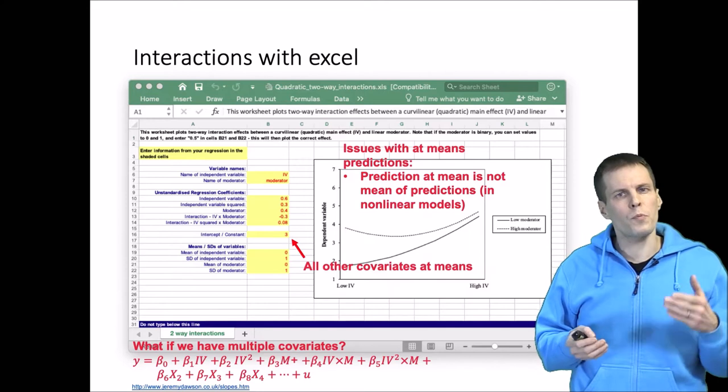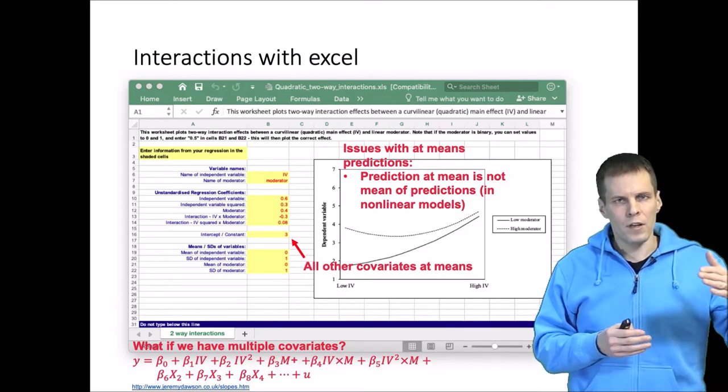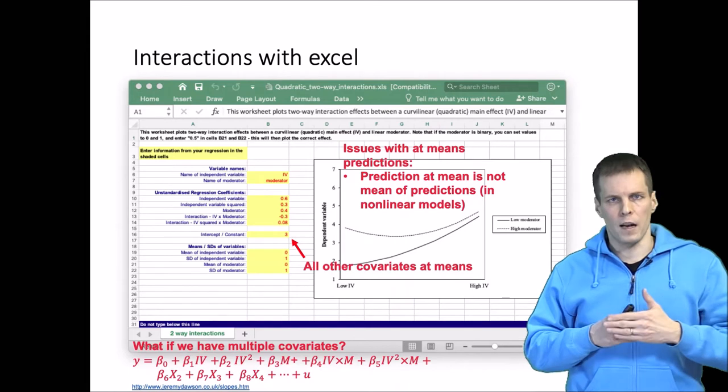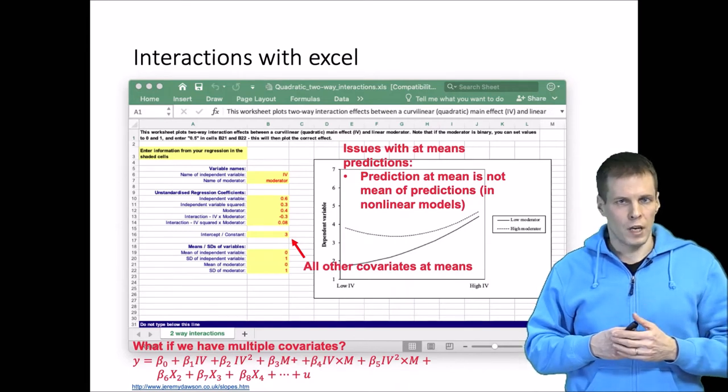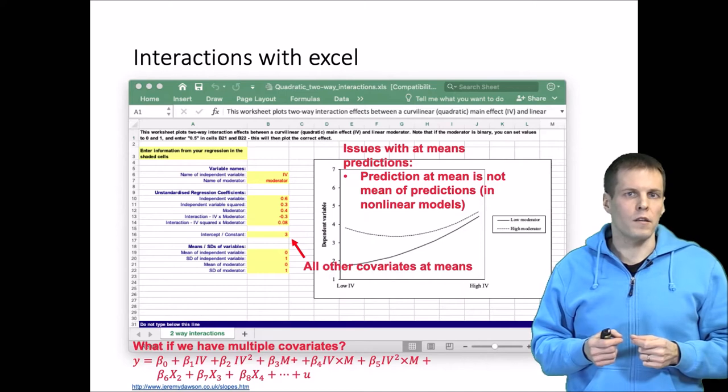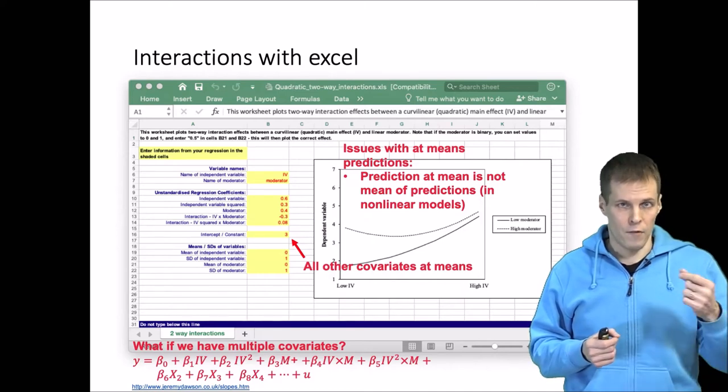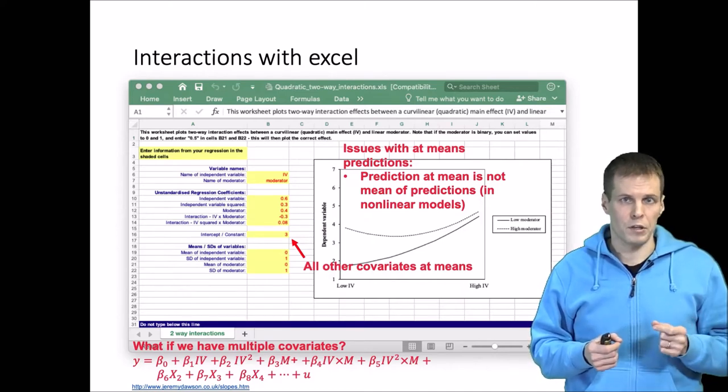If you want to predict, for example, what is the average value for men and average value for women, and then you want to take average of those, if the model is nonlinear you need to actually calculate the average male prediction, average female prediction, and then calculate the mean.